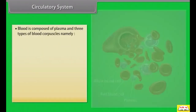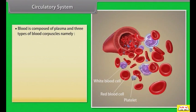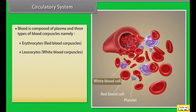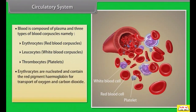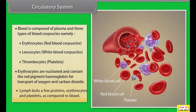Blood is composed of plasma and three types of blood corpuscles: erythrocytes (red blood corpuscles), leucocytes (white blood corpuscles), and thrombocytes (platelets). Erythrocytes are nucleated and contain the red pigment haemoglobin for transport of oxygen and carbon dioxide. Lymph lacks a few proteins, erythrocytes, and platelets as compared to blood.